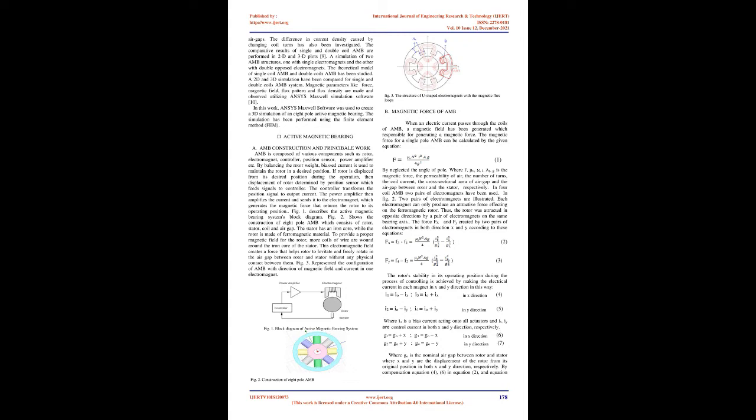The results of a single-axis and double-axis AMB simulation using ANSI's Maxwell 17.1 are presented. For two different structures, a FEM-based simulation has been shown, including magnetic properties such as flux pattern, force, flux density, and inductance for various air gaps. The difference in current density caused by changing coil turns has also been investigated. Comparative results of single and double-coil AMB are performed in 2D and 3D plots [9, 10]. In this work, ANSI Maxwell software was used to create a 3D simulation of an 8-pole active magnetic bearing using the finite element method (FEM).